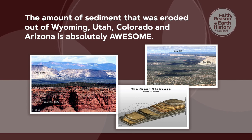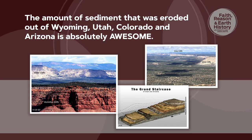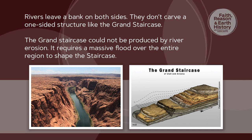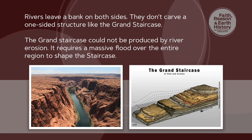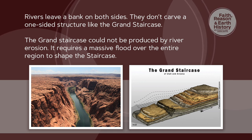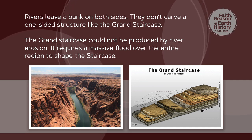The amount of sediment that was eroded out of Wyoming, Utah, Colorado, and Arizona is absolutely awesome. When we try to understand how this got eroded away, that's where it gets puzzling. The usual explanation is that rivers flowing through this area gradually eroded away and removed the sediment. But there's a problem — rivers leave a bank on both sides. They don't carve a one-sided structure like the Grand Staircase. A river may have very sharp cliffs or a broader valley, but no matter what, it has a bank on both sides. The Grand Staircase does not have a bank on both sides — the southern series of cliffs that should be there is simply not there.